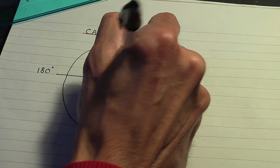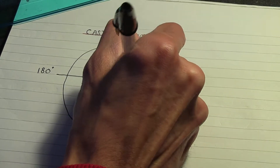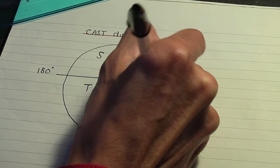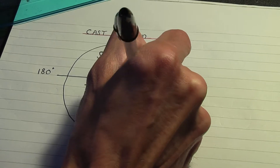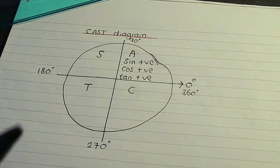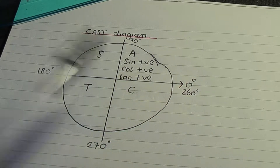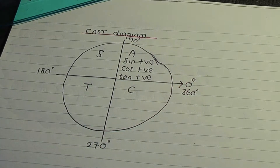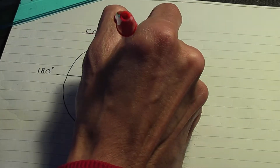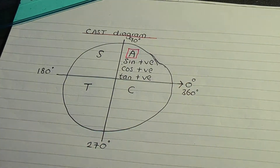So in the first quadrant, sine is positive, cos is positive, and tan is positive.